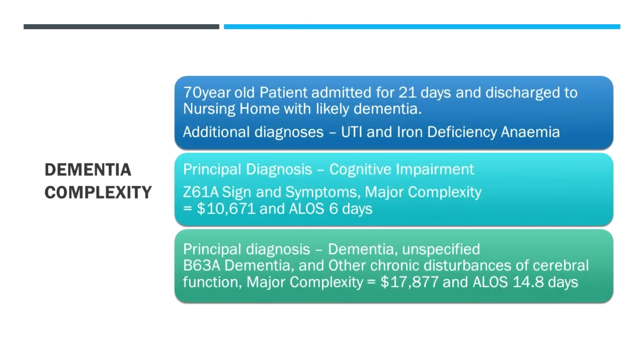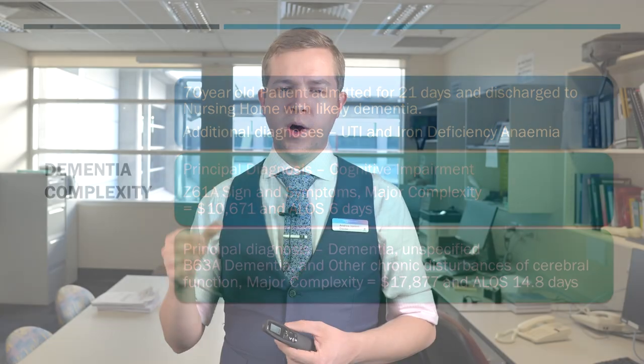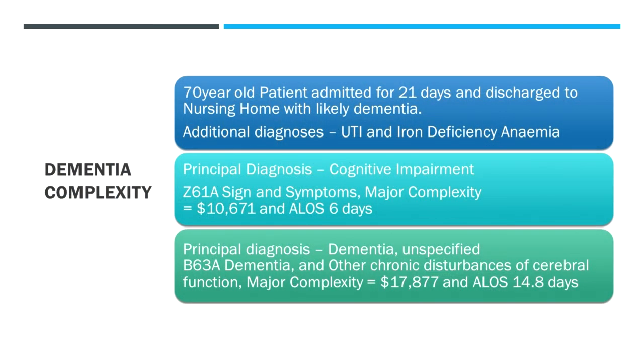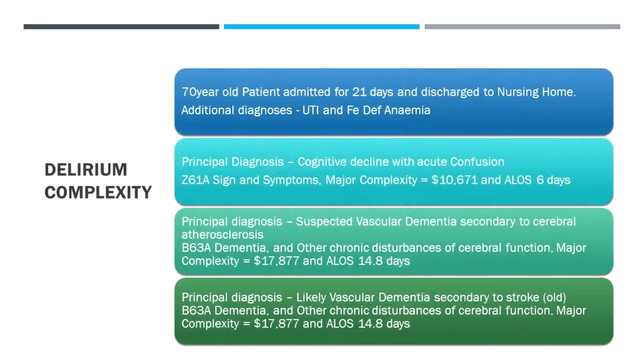For a similar patient admitted 21 days and discharged to a nursing home: writing 'cognitive impairment' generates around $10,000 with an average length of stay of six days — not reflective of three weeks. Writing 'likely dementia' gets $17,877 with an average length of stay of 14 days — still not 21, but much more reflective. If instead we write 'suspected vascular dementia secondary to cerebral atherosclerosis (small vessel disease on CT brain),' funding goes to $17,000. Likely vascular dementia secondary to previous stroke codes equally well.